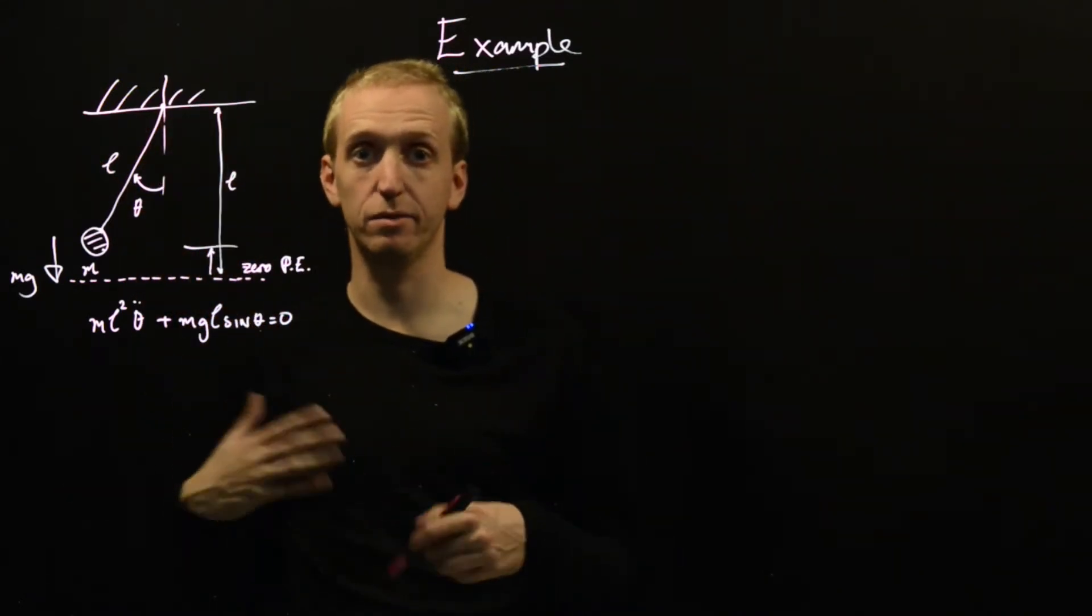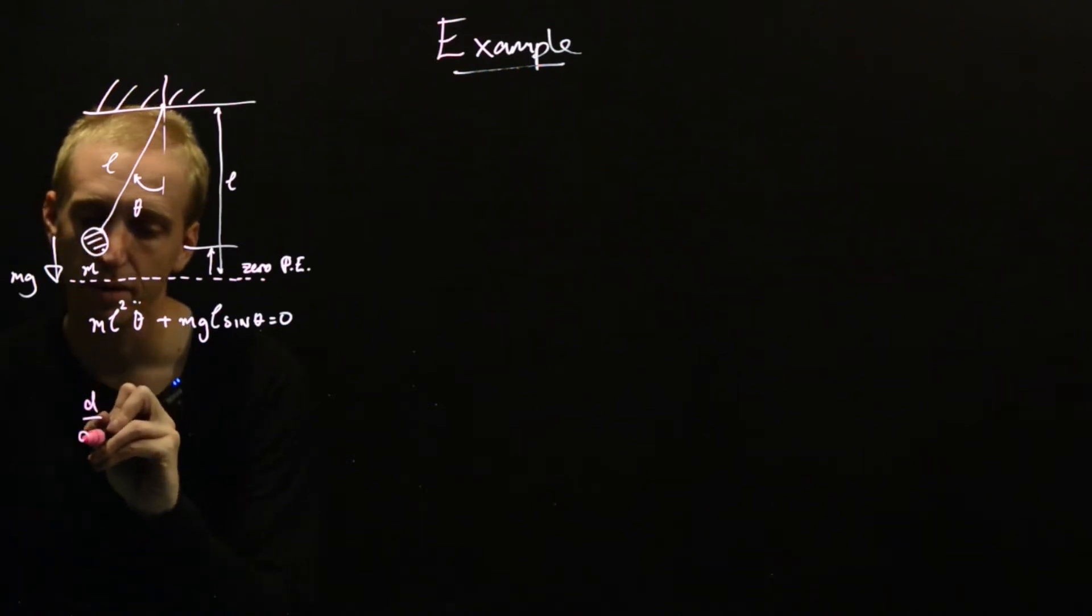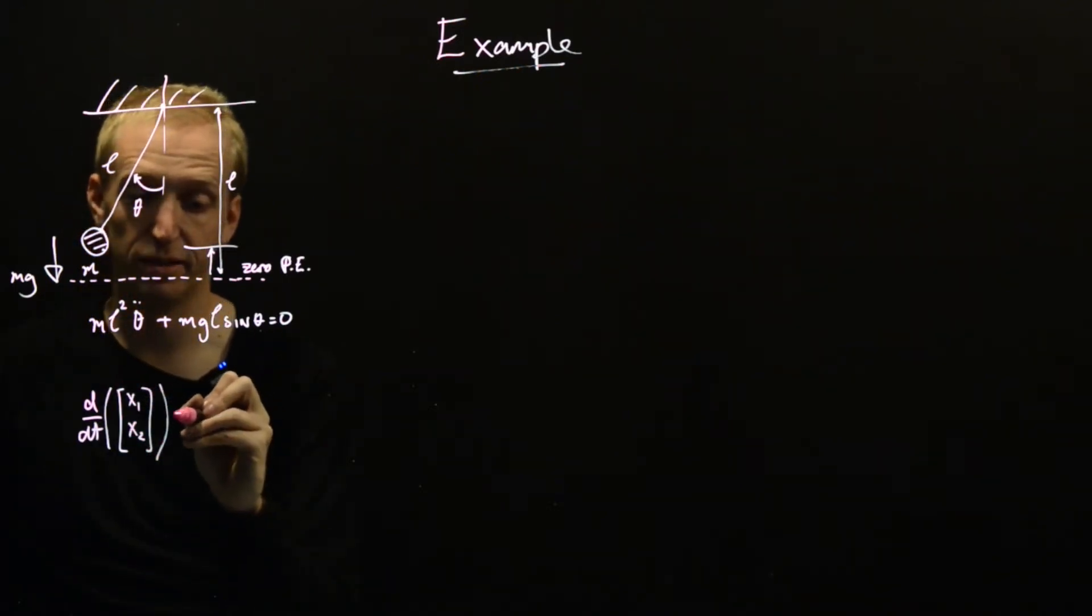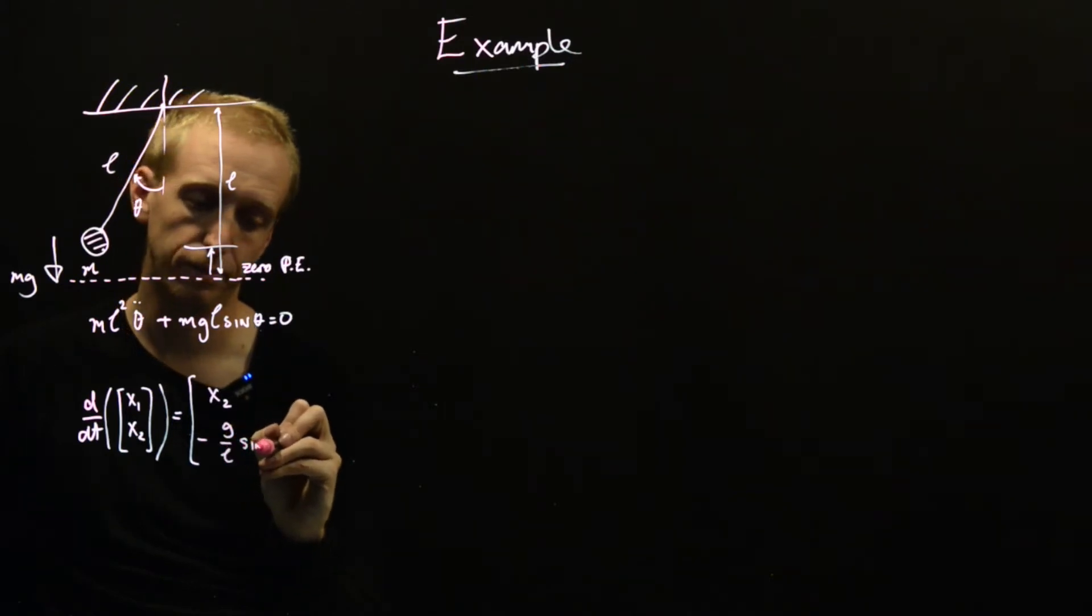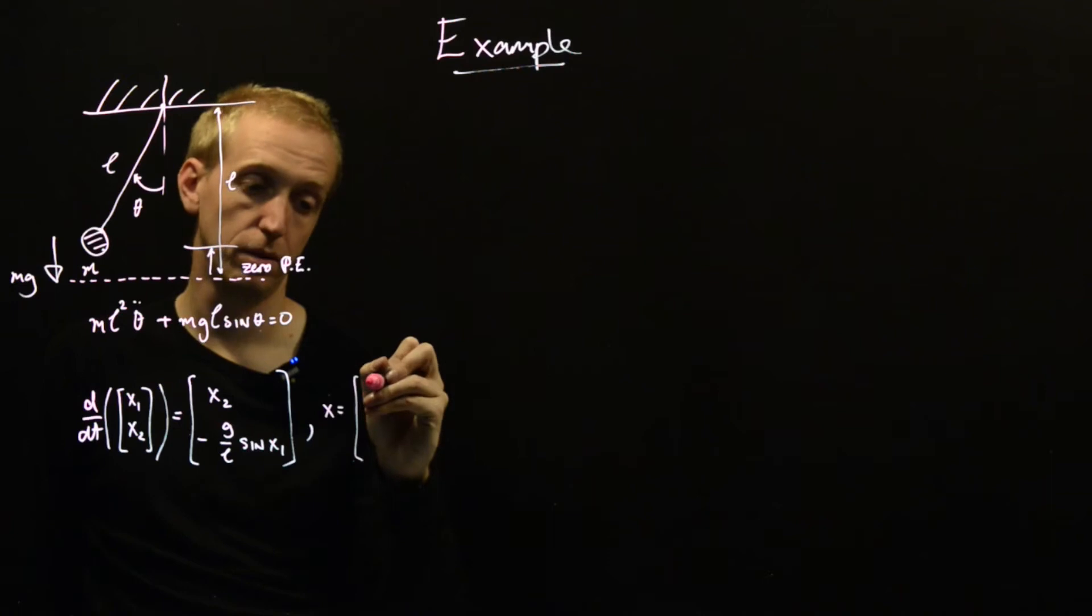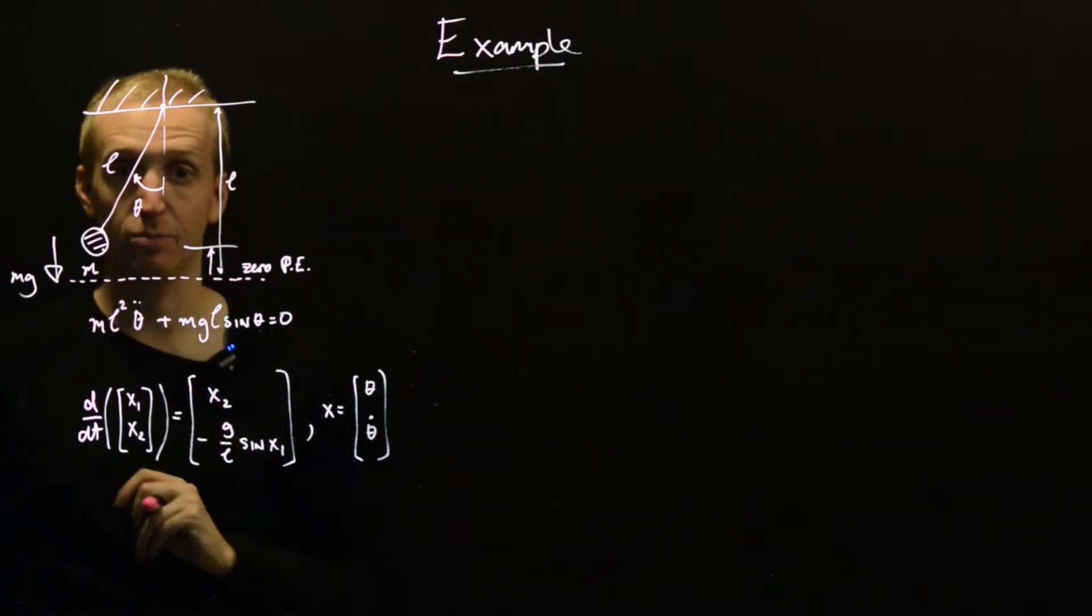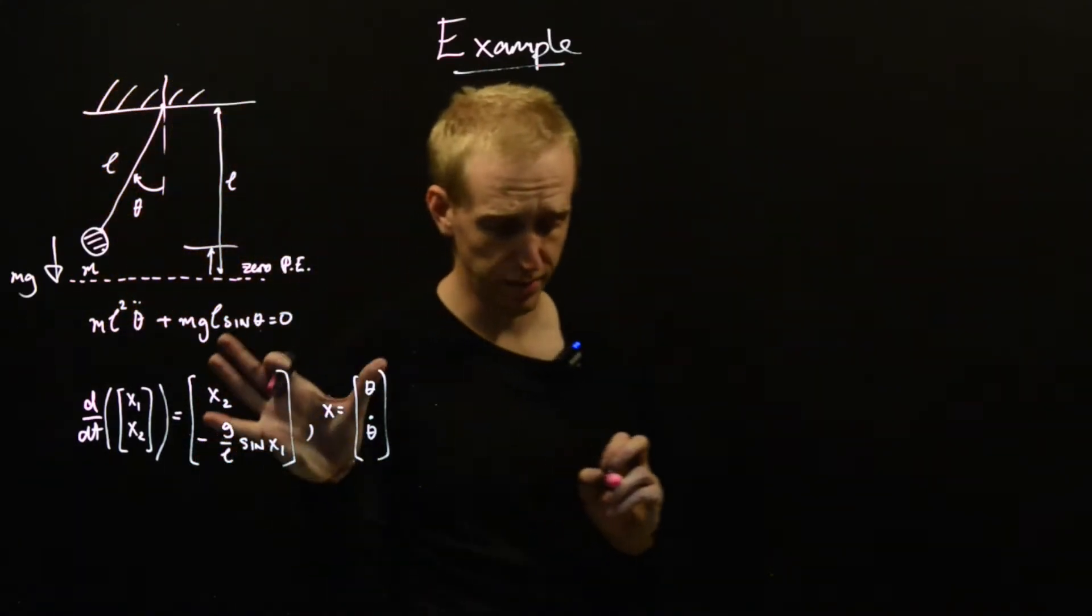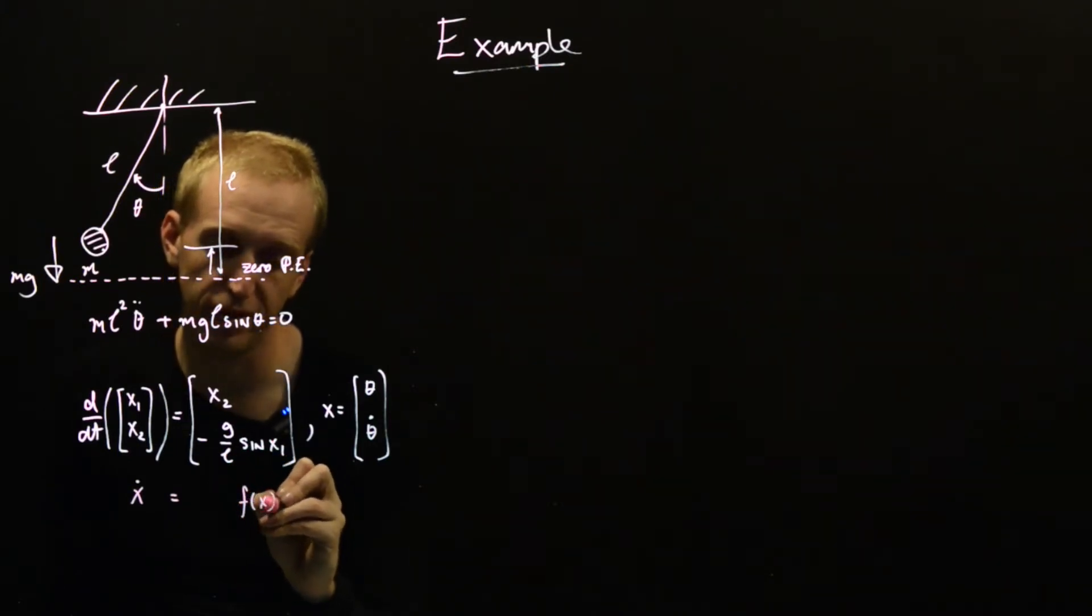Now we want to do our Lyapunov analysis, so first thing we've got to do is put it into our standard form. This is becoming pretty familiar now. So we introduce our state x1, x2, and we set x-dot is equal to f of x, and in this case we can put an x2 here and a minus g over L sin x1 here. So we've made the choice for our state to be theta and theta-dot. So this bottom equation here, this is just our state space model in these new coordinates, and this is our extra equation that we throw in whenever we have higher order derivatives here.